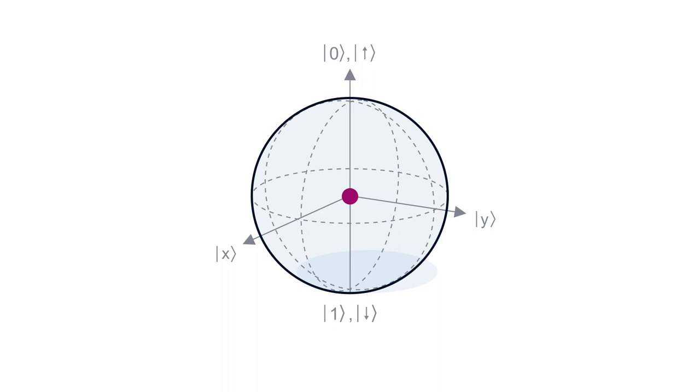However, if we vary the time in between those two pi-over-2 pulses, we will observe that after a certain time the spin qubit will no longer rotate to the spin-up state. Instead, it will remain on the equator. Indeed, this is the time where the qubit is completely dephased.